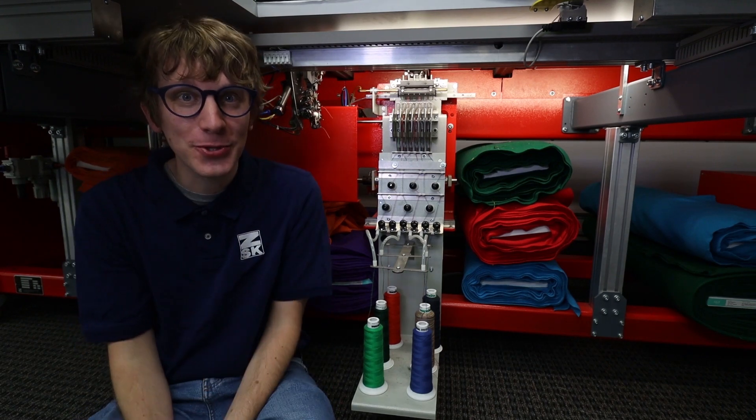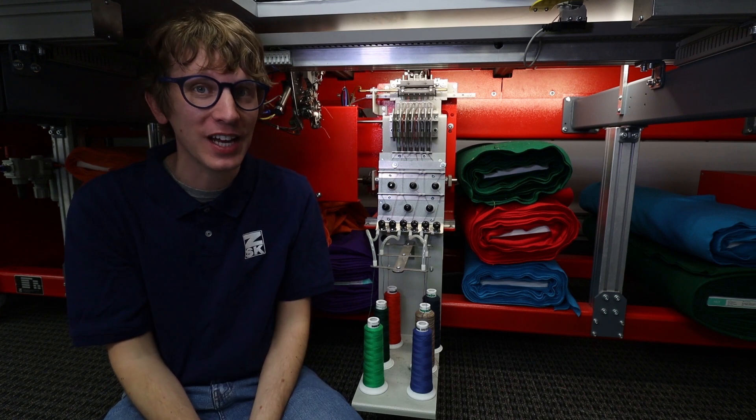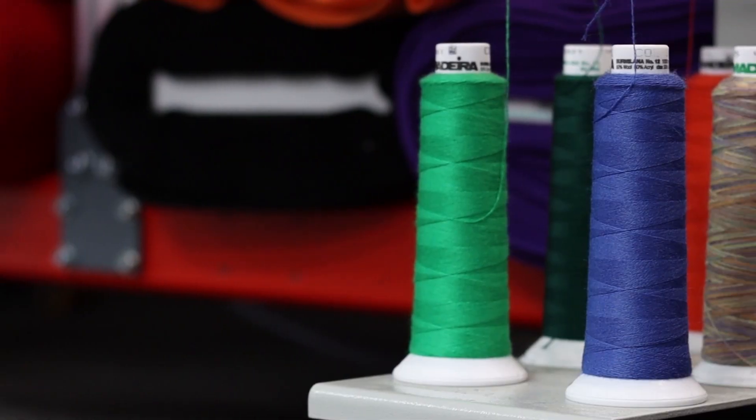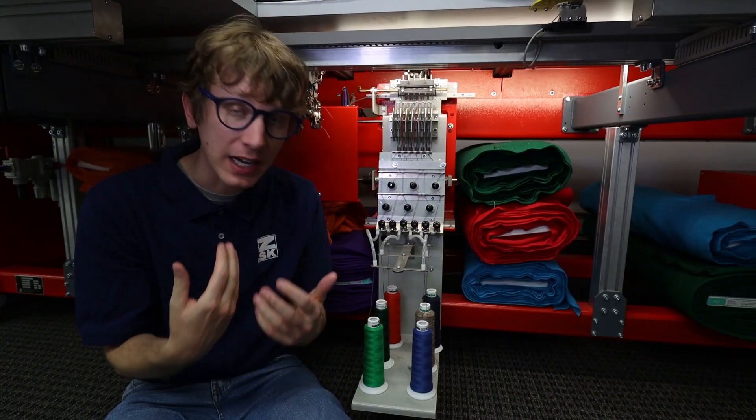So here we have the underside of the K-head. The underside of the K-head is actually where most of the action happens. In the K-head we have six different threads that we can feed in. Those threads could be something like cotton.